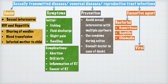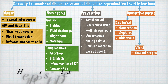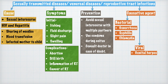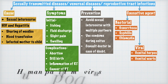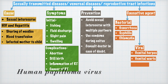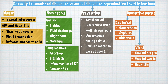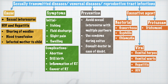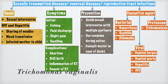Viral causative agents include: genital herpes, caused by herpes simplex virus; genital warts, caused by human papillomavirus; hepatitis, caused by the hepatitis virus; and AIDS, caused by HIV, the human immunodeficiency virus. The protozoan Trichomonas vaginalis causes the disease trichomoniasis.